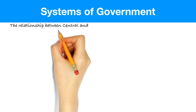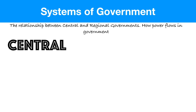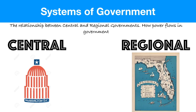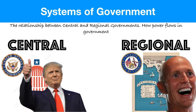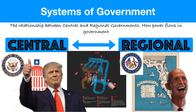So let's define a system of government: it is the relationship between central and regional governments — or, how power flows in a government. In the United States, the central government would be Washington, D.C., and the regional or state governments would be all 50 states. Power from the central to the regional government could be shared by both, or it could move in one direction toward the central government or in the other direction toward the regional government.